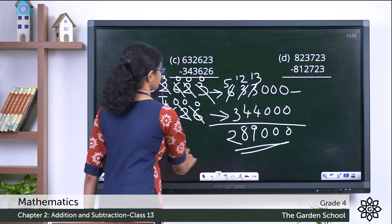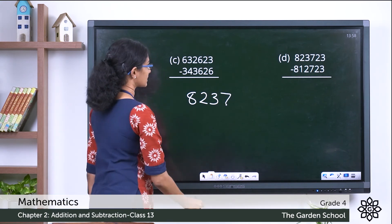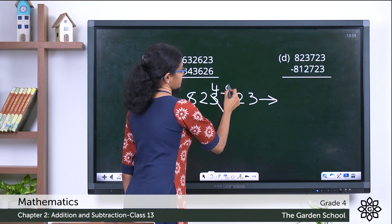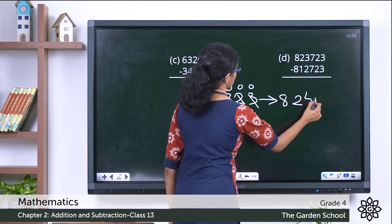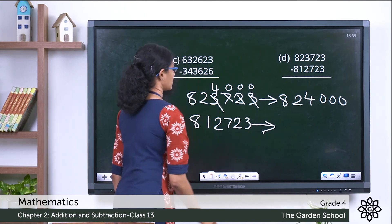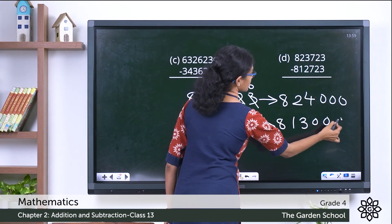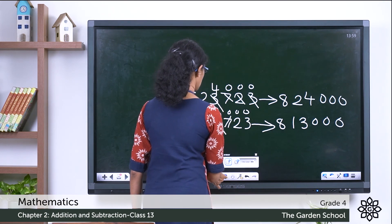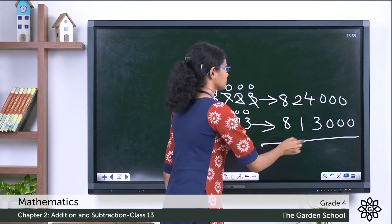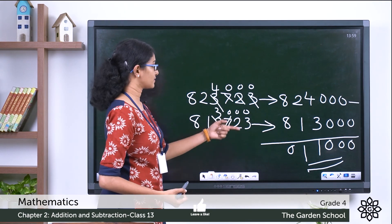Question D: the minuend eighty-eight lakh twenty-three thousand seven hundred twenty-three, after rounding off, gives eighty-eight lakh twenty-four thousand. The subtrahend eight lakh twelve thousand seven hundred twenty-three, after rounding off, gives eight lakh thirteen thousand. Subtracting: the estimated difference is eleven thousand.